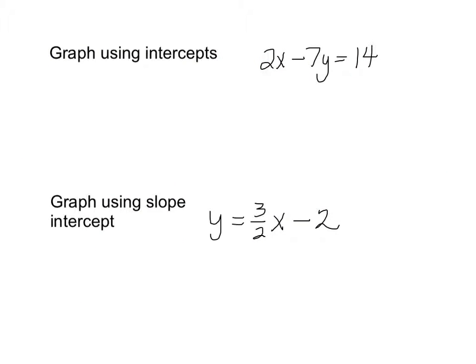Okay, these last two problems I want you to write down in your composition notebook. I want you to graph using the method indicated on this screen. The first one, use the intercept method. Go ahead and graph it. And then the second one, use the slope intercept form method. And I will check your notebooks when I see you in class. See you then.